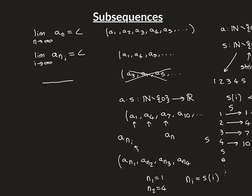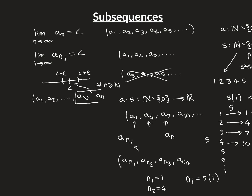Remember: if the original sequence converges to a limit L, it means the terms get to and stay indefinitely close to L. We can take any epsilon interval around L — from L−ε to L+ε — and there will exist a big N such that for all little n greater than or equal to N, the terms are inside that epsilon interval. That's the epsilon definition of the limit.